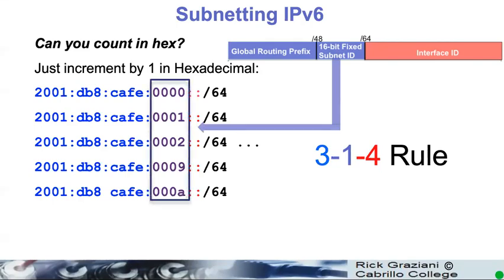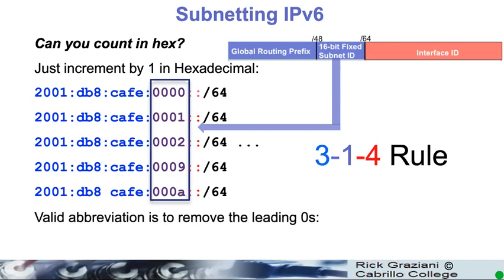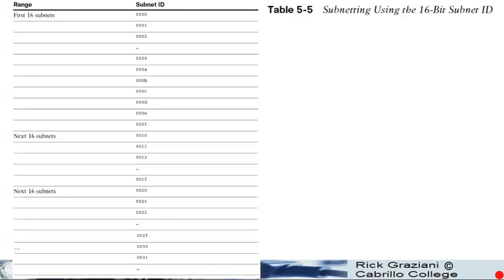So, let's say we have a slash 48 and we have a 16-bit subnet ID. Here we're showing it with all four hexadecimal digits. All you need to do is increment the subnet ID in hex — it's really that easy. Here it is showing it in the compressed format, at least for one of those subnets. But it basically really is that easy.